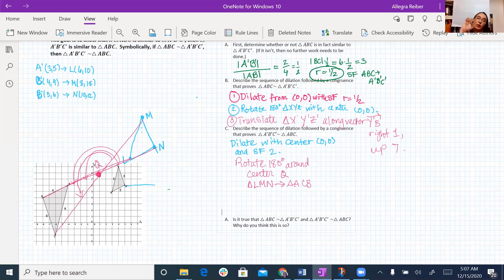So in this way, I've been able to transform A prime, B prime, C prime back onto ABC. Because I could do that via dilation followed by, in this case, just a rotation, I also could have rotated around the origin and then translated. I'm successful.